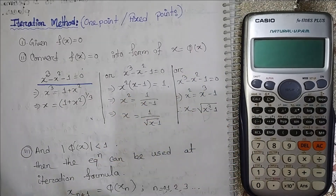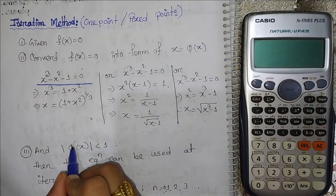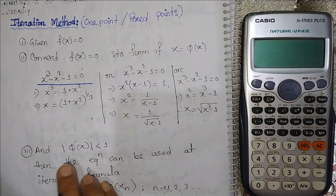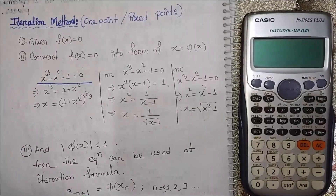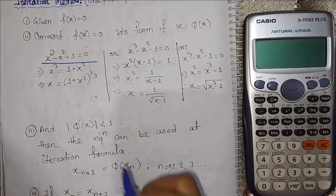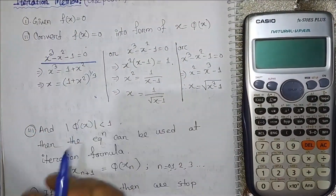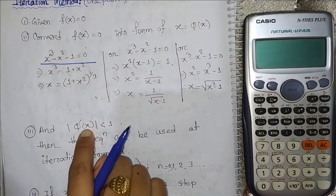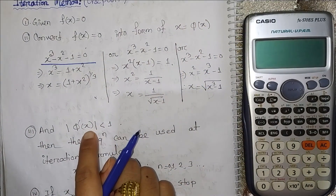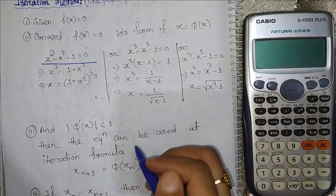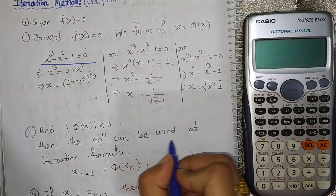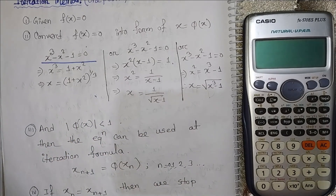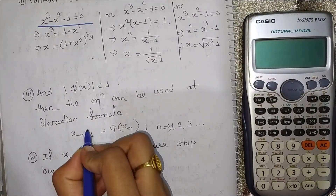The third step is to set the value to the derivative. We check which form of the equation satisfies the convergence condition. Now this equation can be used with the iteration method, which is very important.